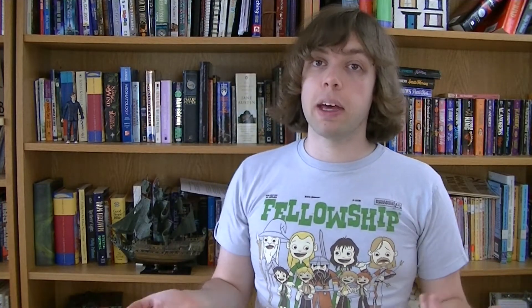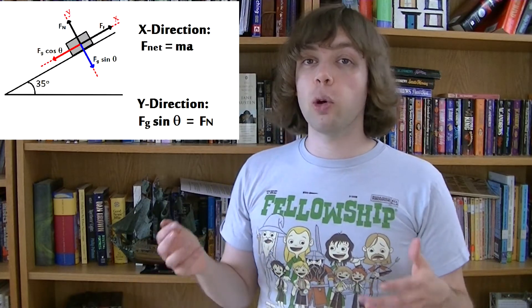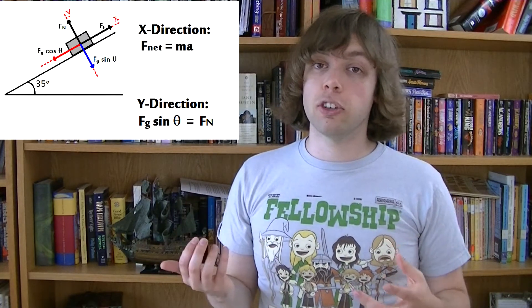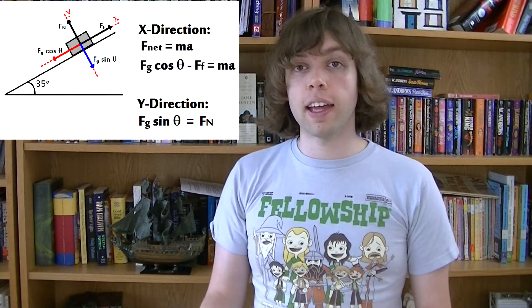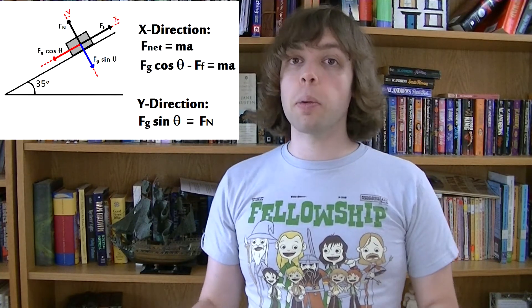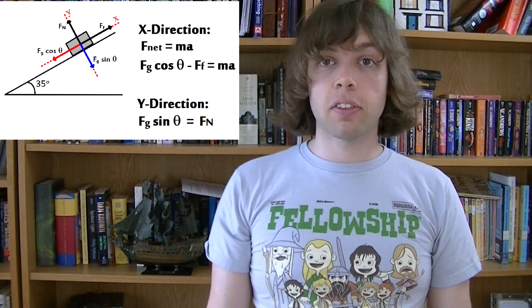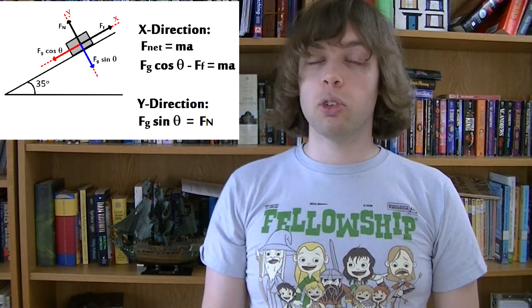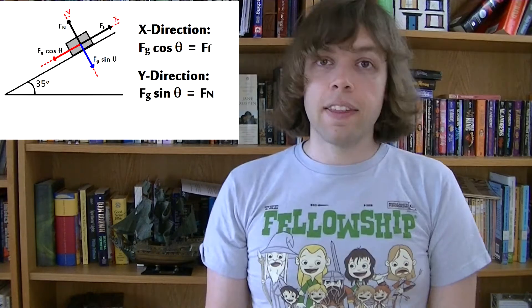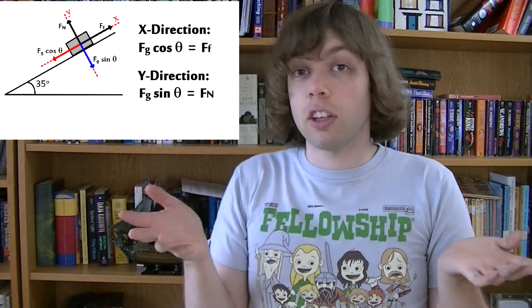In the x direction, we now write a sum of forces equals ma, or F-net equals ma. We replace F with the forces actually acting in this situation: Fg cosine theta minus Ff — the component of gravity acting down the slope minus the force of friction acting up the slope — equals m times a, the mass of the boulder multiplied by its acceleration. If we're given enough numbers, we can solve for any missing value.